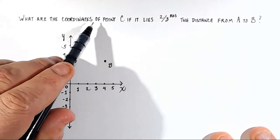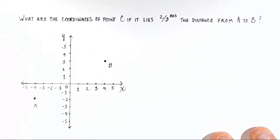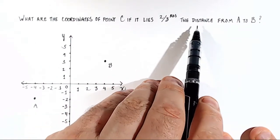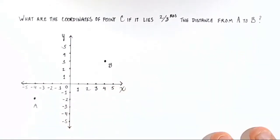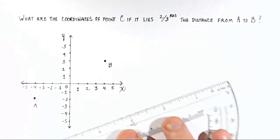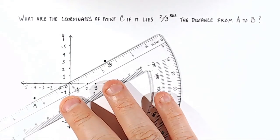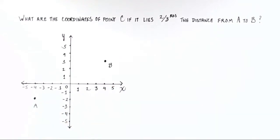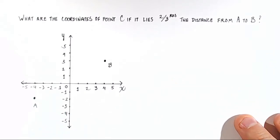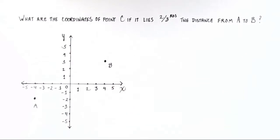What are the coordinates of point C if it lies two-thirds the distance from A to B? So somewhere on this path between A and B, there is a point C, and that point C has to lie two-thirds the distance between A and B. I'm going to show you how to solve this. The very first thing we have to do is identify what the coordinates are of A and the coordinates are of B.